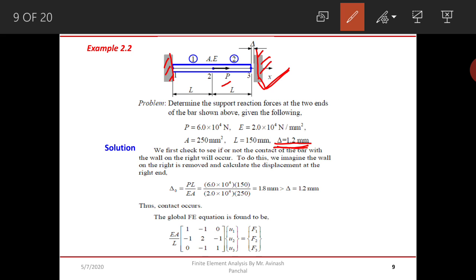First we will check if the contact of the bar with the wall on the right will occur, and we will simplify the effect of this load P on this bar and find the deflection at node number 3. The entire deflection in the bar may be calculated with the help of the simple relation PL upon EA, and by putting all the necessary values we got the value as 1.8 mm, which is greater than the allowable displacement of 1.2 mm.